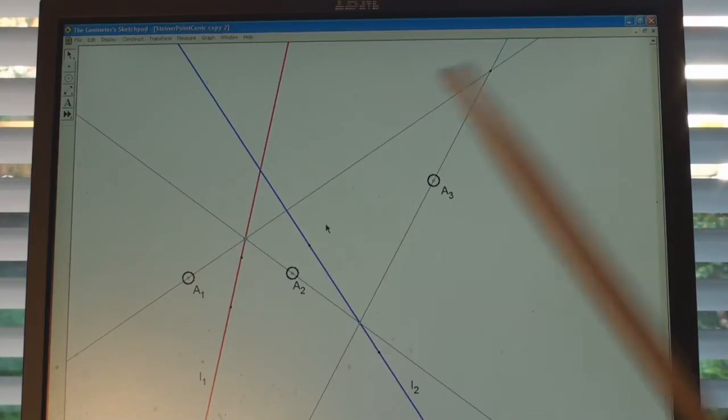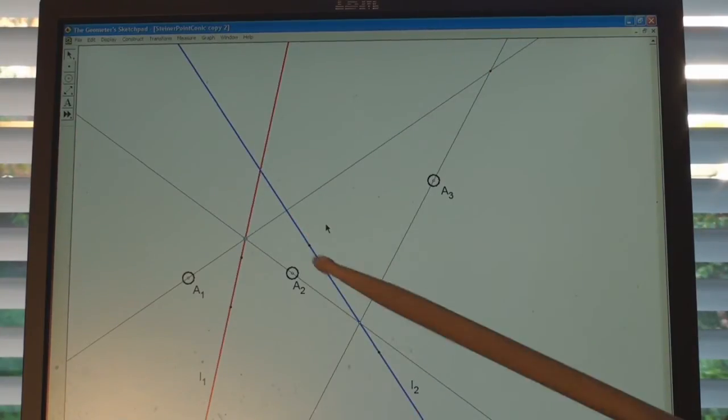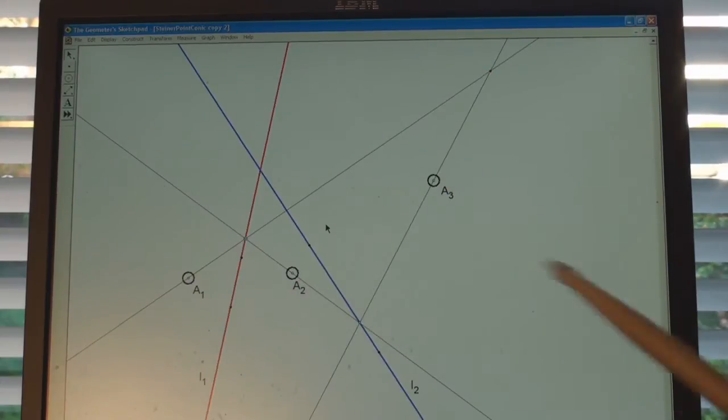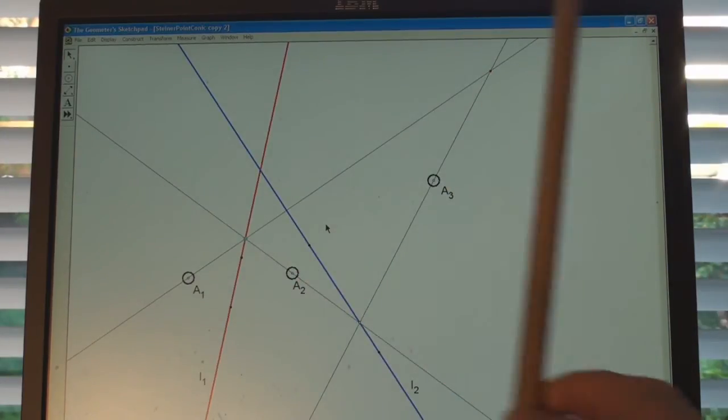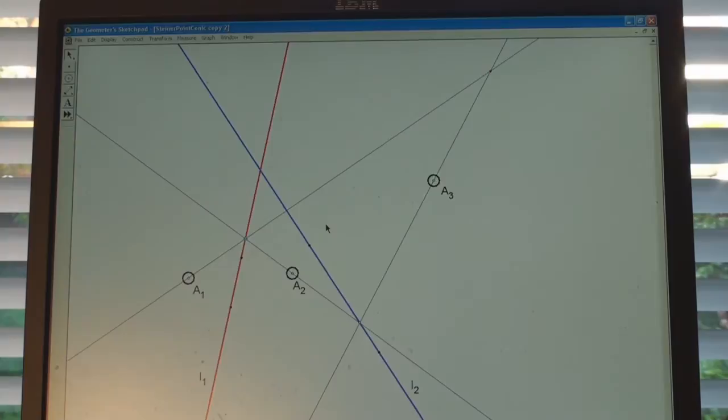And then we do the same kind of thing using the line L2 as a line of perspectivity between the pencil here and the pencil here. So that this line through A2 gets matched up with this line through A3.